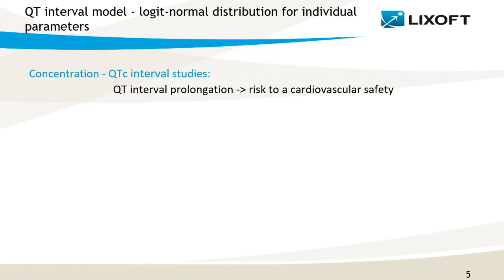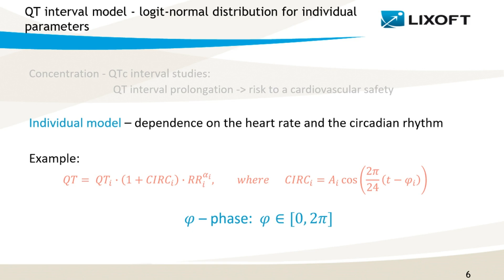In the second example, I explain how to adjust the limits of the logit distribution for individual parameters. For this, I use a model of the QT interval. This interval is read from an electrocardiogram and characterizes the electric properties of the heart. It is important because its prolongation increases the risk of cardiac death. Typically, a model of the QT interval depends on the heart rate, noted here by RR, and daily changes caused by the circadian rhythm. The circadian rhythm can be defined by phasor functions, and in the simplest case it is characterized by an amplitude A and a phase phi. While amplitude can take all non-negative values, phases by definition belong to a 0 to π interval.